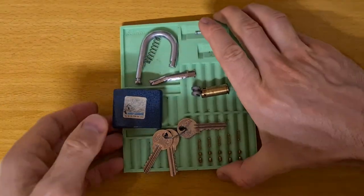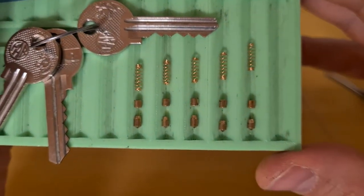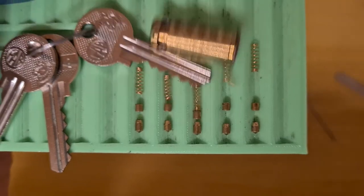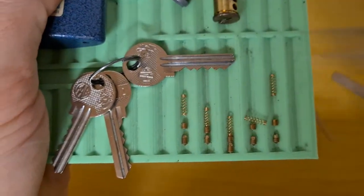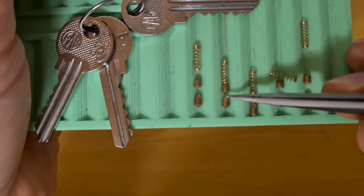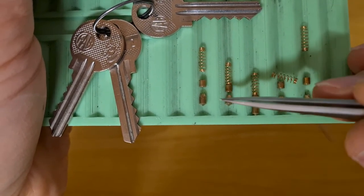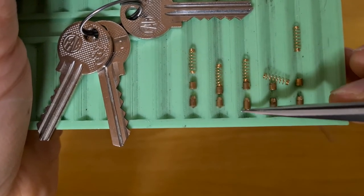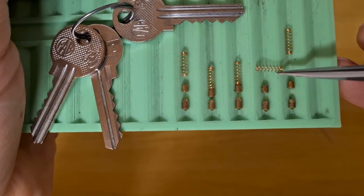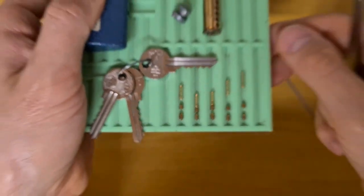So one last look at the pins. The key pins are kind of tapered. That should have made oversetting easy, I guess, but in reality it just made the picking easy. So yeah, that's it.